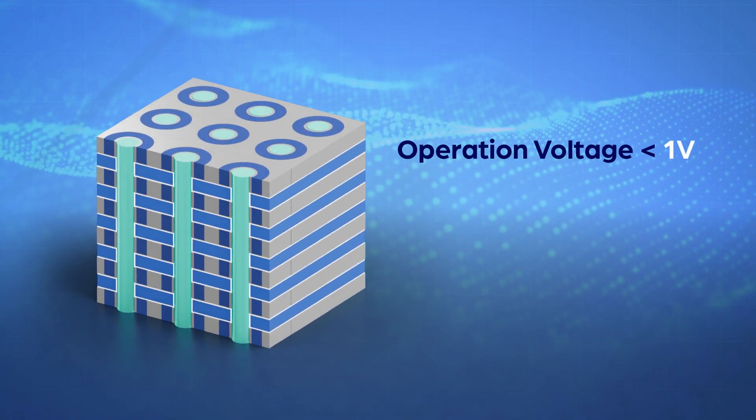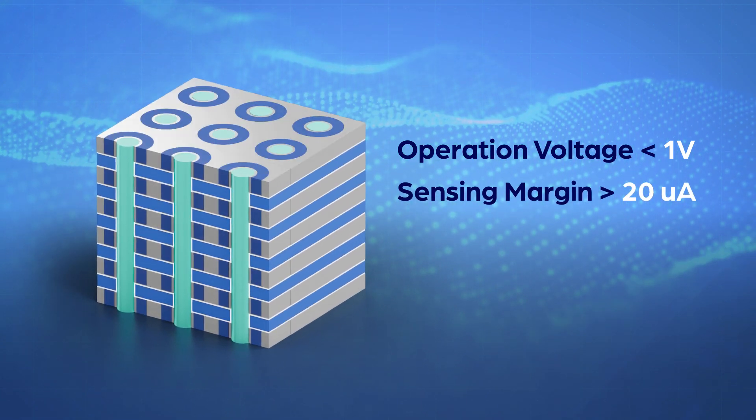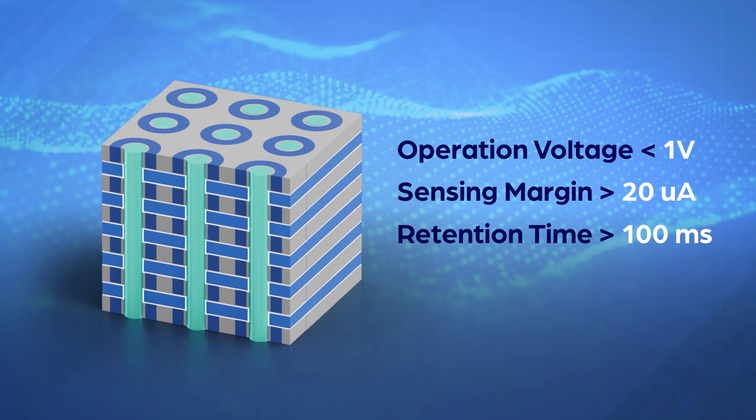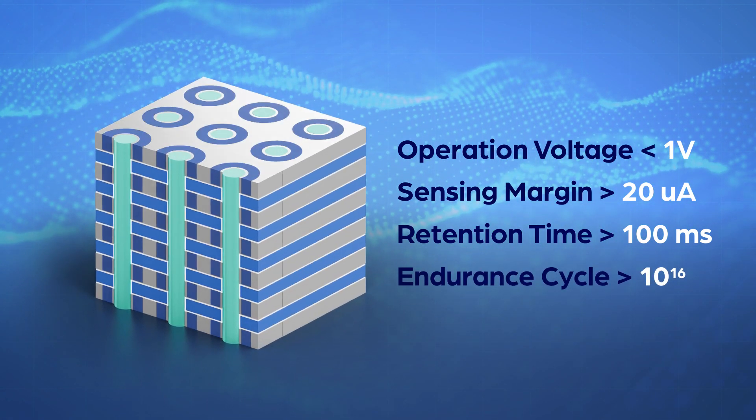To sum up, 3D XDRAM's operation voltage is lower than 1 volt, sensing margin is higher than 20 microamperes, retention time is longer than 100 milliseconds, and endurance cycles are higher than 10^16.